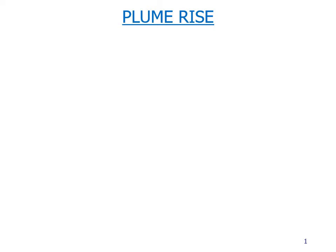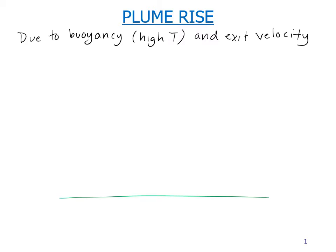Plume rise is something we need to consider for hot exhaust gas coming out of an elevated source. Due to buoyancy, if the emissions are at higher temperature than the surrounding air, and what we call the exit velocity of the plume - it's being forced upward out of the stack - this plume could very well rise above the top of the stack.